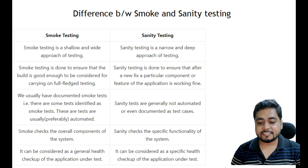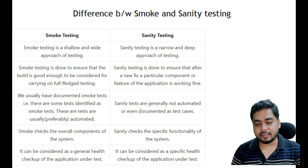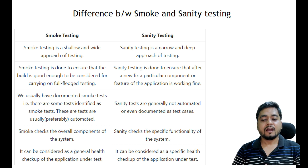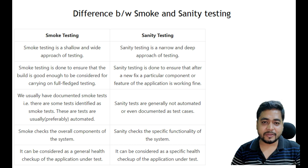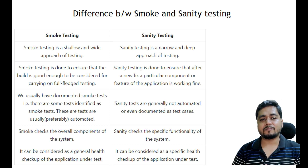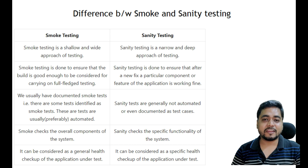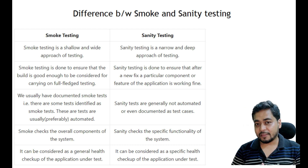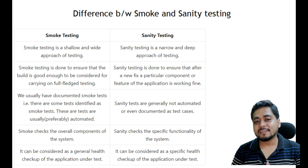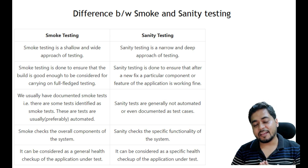Smoke testing checks the overall component or functionality of the system, while sanity testing checks the specific functionality that was brought in or fixed in that build. Think of it like a medical checkup: there is always a basic health test and there are detailed tests. The basic tests give an overall picture of health, while detailed tests give deep information. Similarly, smoke testing is a basic health check of the build, and sanity testing is considered a detailed health check of the application under test.